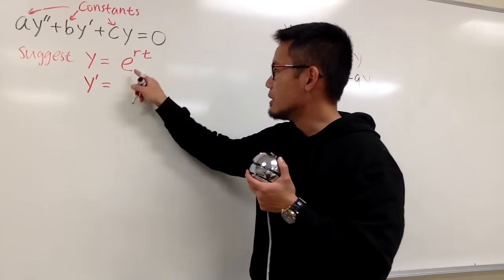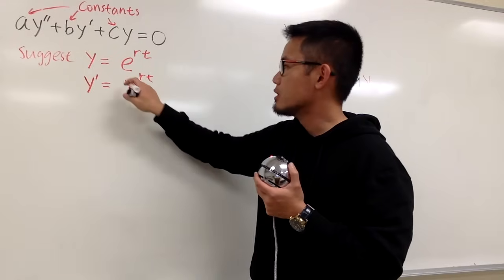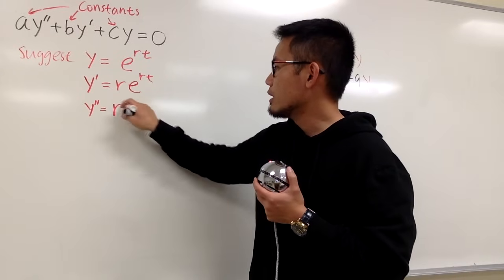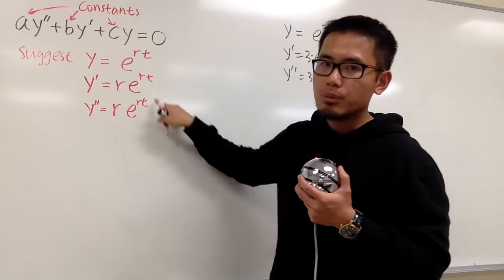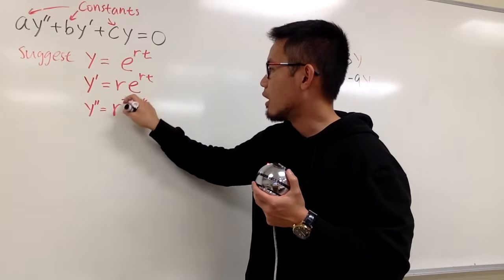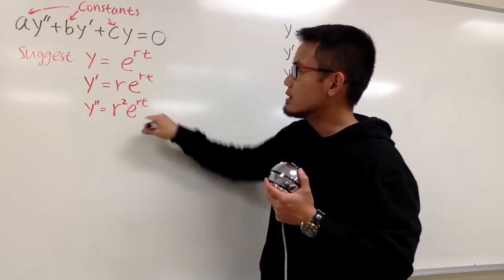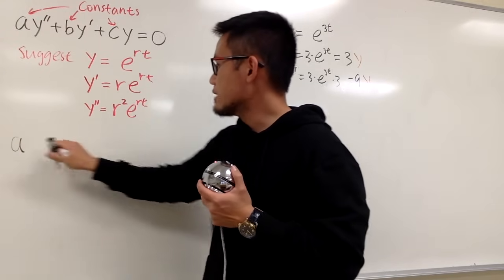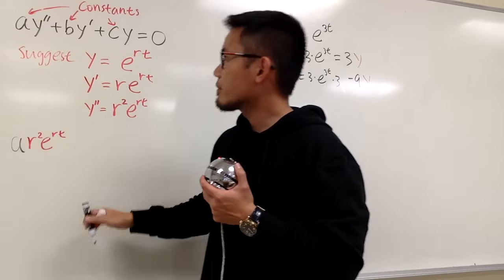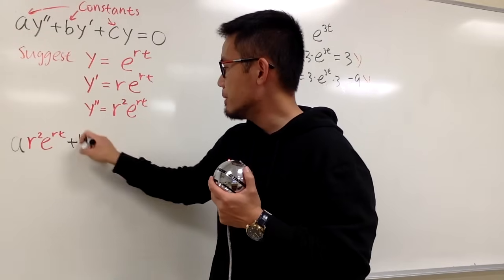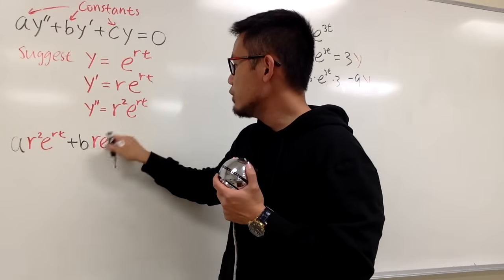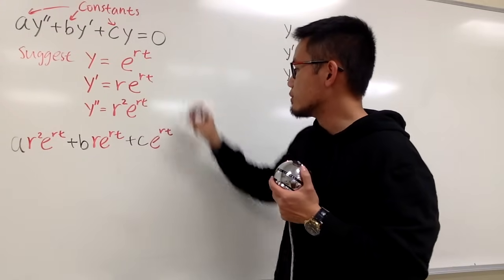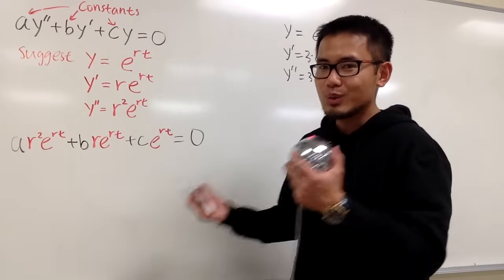y' is going to be r e to the rt. And then y'' is going to be r e to the rt multiplied by another r, which gives r squared e to the rt. Now let me plug all this in correspondingly: a times r squared e to the rt, plus b times r e to the rt, plus c times e to the rt, and this equals zero. Can we squeeze out the condition?